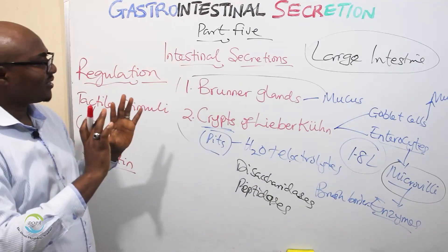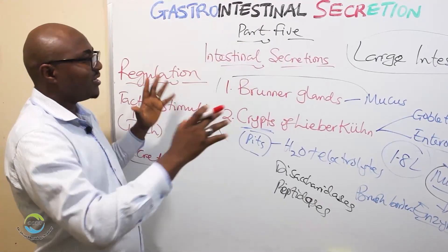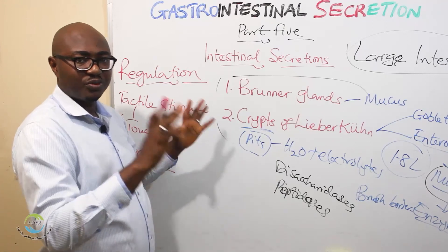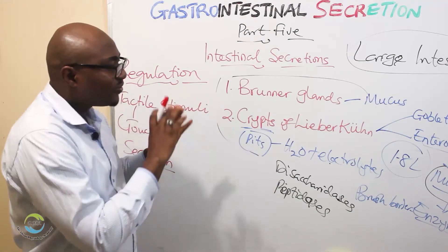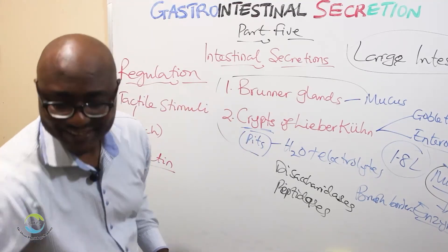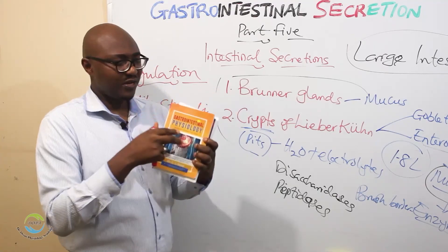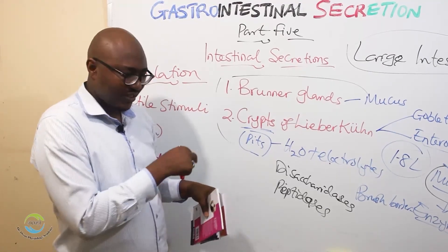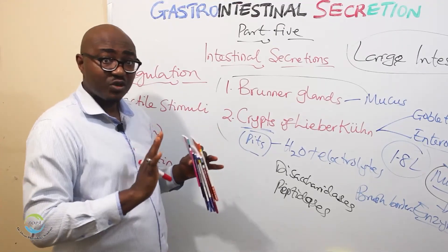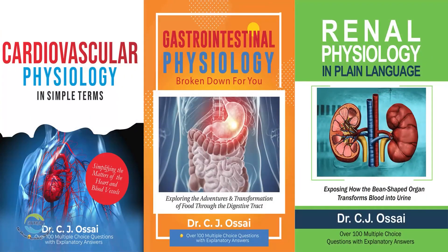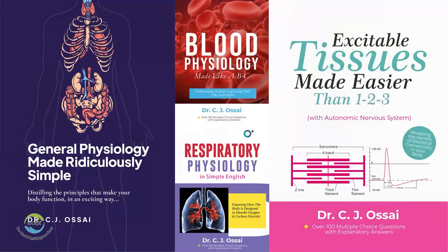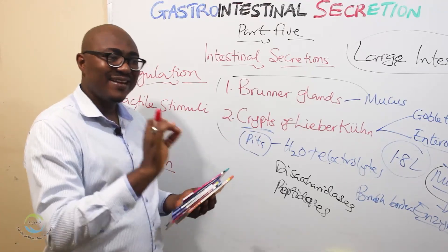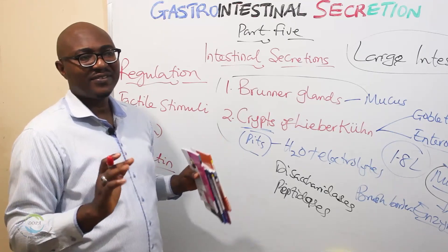So that is what you need to know about intestinal secretion. The next major topic on gastrointestinal function will be digestion and absorption. For further reading, I've written a book on GIT physiology — 'Gastrointestinal Physiology Broken Down for You' — and seven other books in physiology. Check the link below to download the soft copy on Okada Books, and visit our website for more resources to make learning physiology easy, exciting, and effective. See you in the next video.